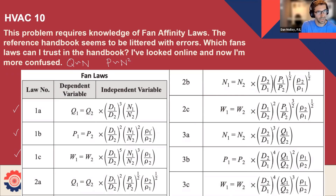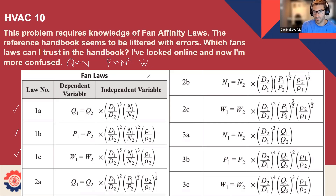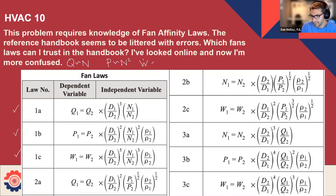We'll come back to density at the end. For now, let's assume density is not changing. Lastly, the power — they call it W, though I like to call it W-dot to remind ourselves it's work per unit time. The power is proportional to speed cubed.